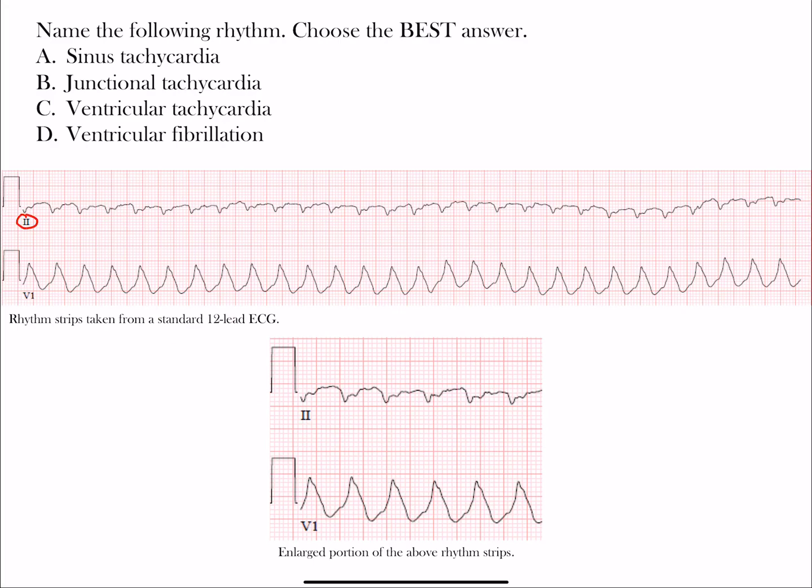Notice we have lead two, one of our inferior limb leads, and lead V1. These are rhythm strips taken from a standard 12-lead ECG, and then here's the enlarged portions of it, just to help you see those little small squares there if you need any assistance with finding the rate.